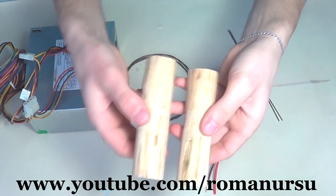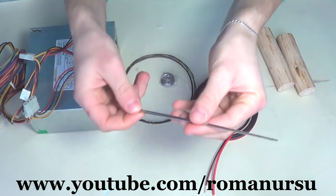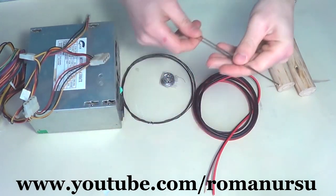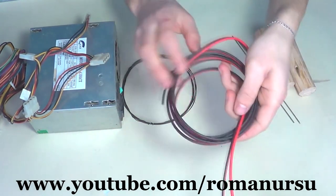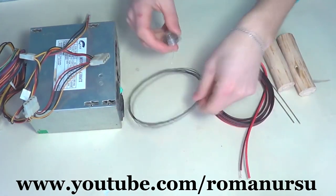First we need to make two wooden handles. In my case I used two pieces of a branch. Then we need two long nails or two pieces of thick wire, about a meter of copper wire and also some nichrome wire, 0.4 to 0.8 mm thick.